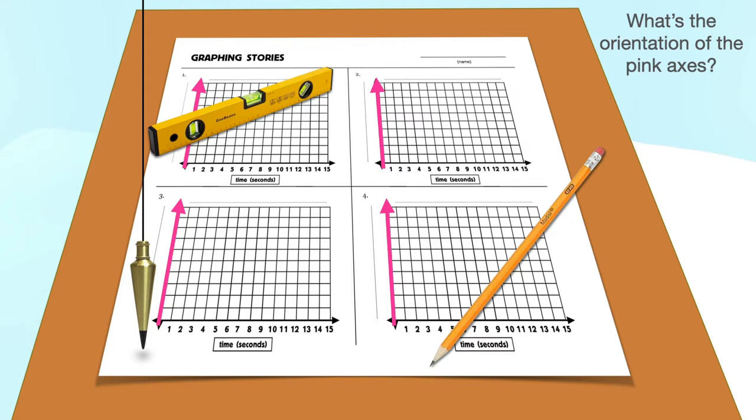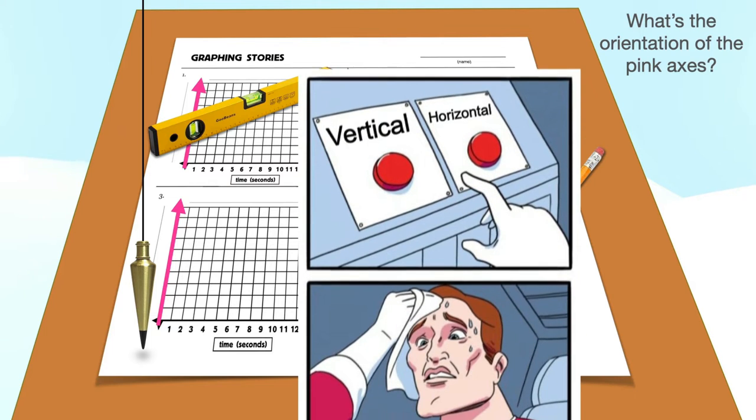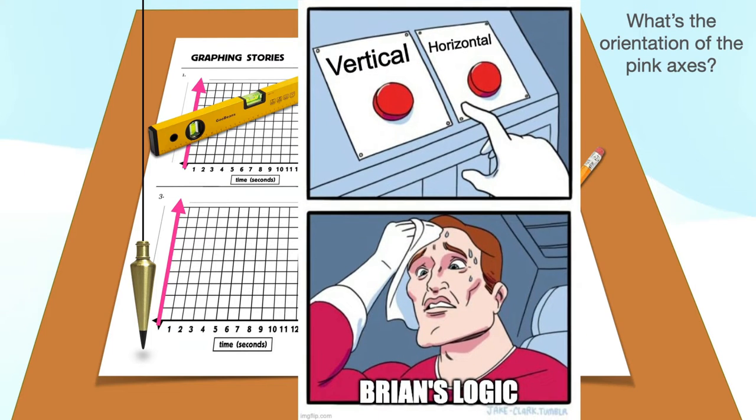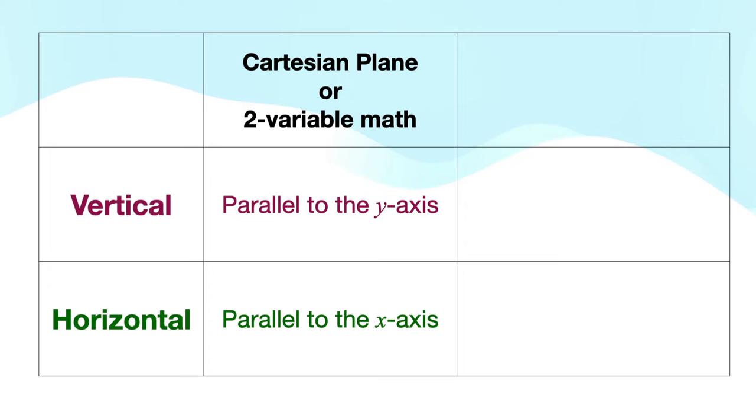Here's a question: What's the orientation of the pink axes, vertical or horizontal? Okay, maybe that was a bit unfair, because the answer relies on one's definition of horizontal and vertical. If the context is graph paper illustrating the Cartesian plane using x and y variables, then vertical is parallel to the y-axis and horizontal is parallel to the x-axis.